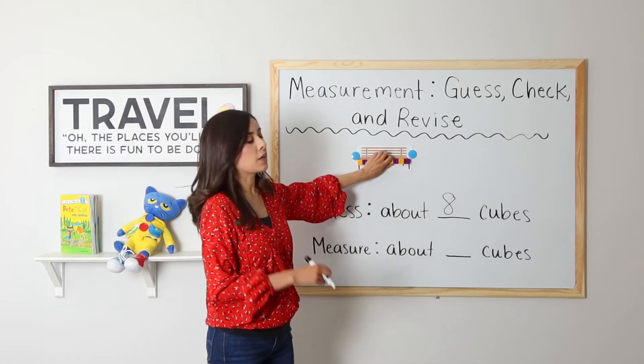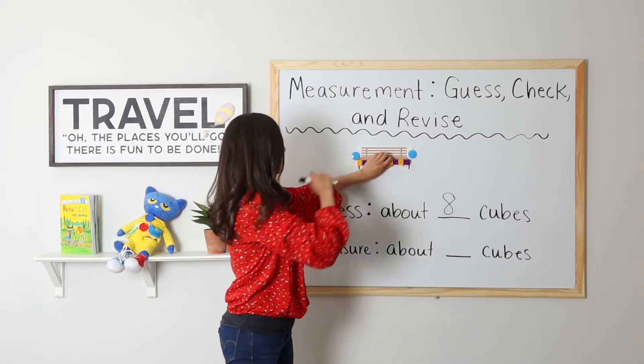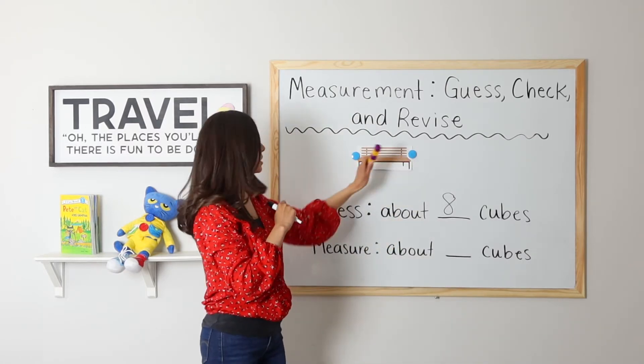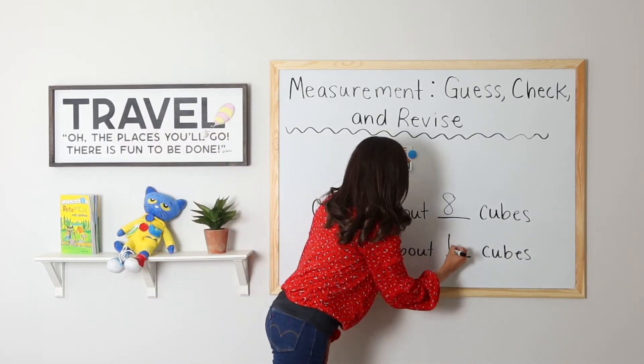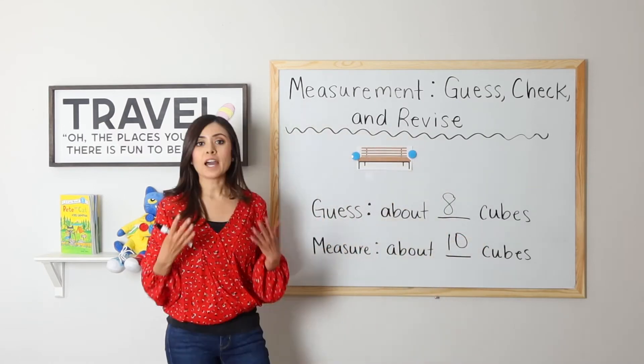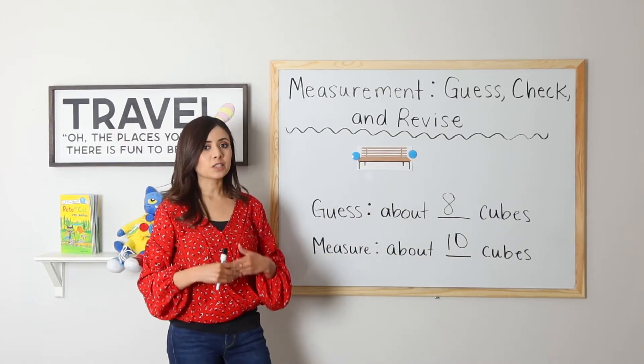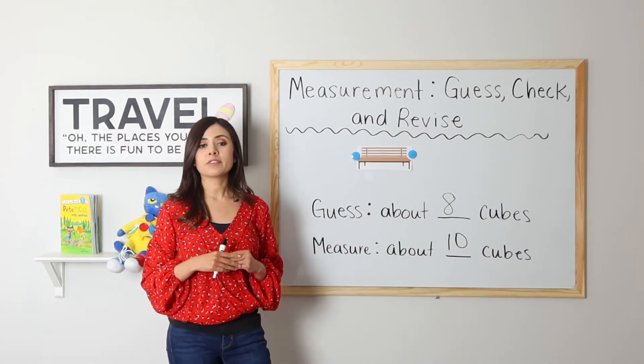Yep, that is way better. From end to end, we have 10 cubes. So after revising, we see that the measure is about 10 cubes. I was off by two, but that's okay because revising helped me fix my problem.